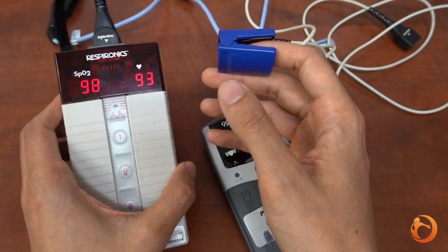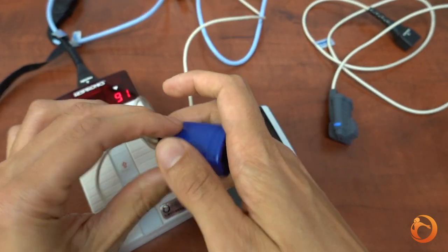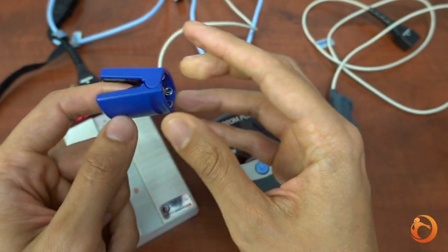If you have problems getting a good signal or a steady reading, try changing the finger, try the other hand or warm up your fingertip beforehand.